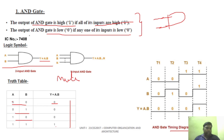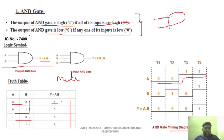In the timing diagram, A is represented as 0,0,1,1 and B is represented as 0,1,0,1. The output is 0,0,0,1. This is the AND gate operation shown in the timing diagram, which you can draw by yourself.